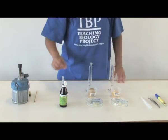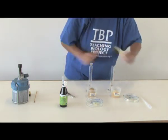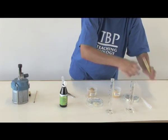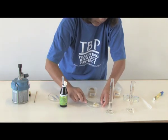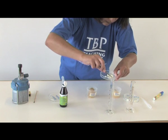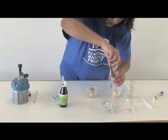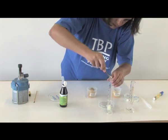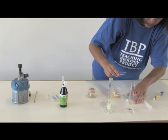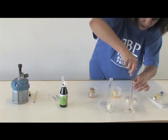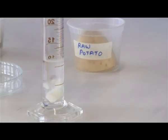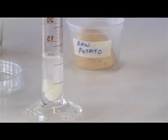Now all I've got to do is label one tube A and the other tube B, and add cooked potato to one. So in tube A we have cooked potato, and in the other I'm putting my raw potato. I've cut the potato fairly small to create a greater surface area for the enzyme reaction.